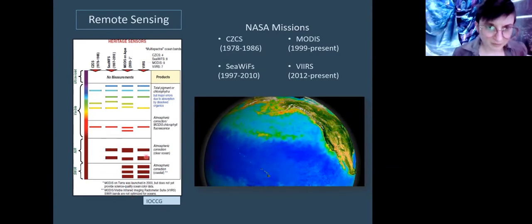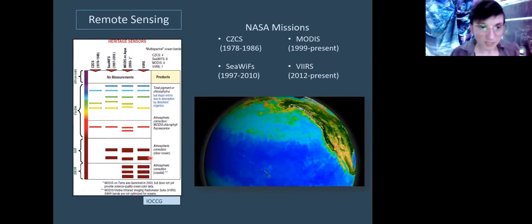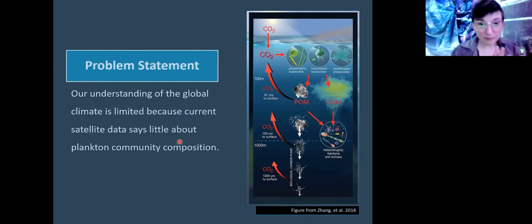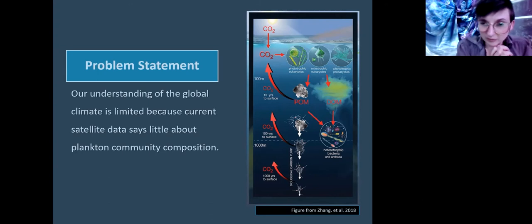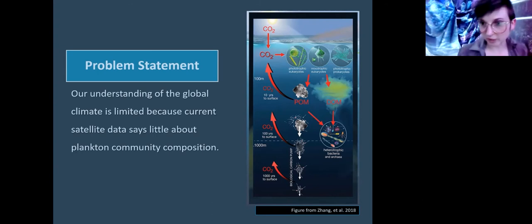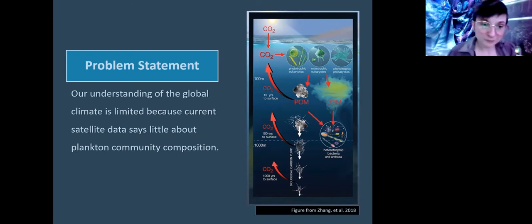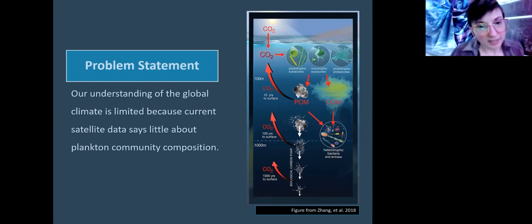But even still, we really have quite a range that we're not able to see. So the big problem that I see in microbial oceanography is that the global climate understanding is really limited because the current satellite data says little about plankton community composition. It reads chlorophyll as one chlorophyll. It might not even detect some chlorophylls, but it lumps all plankton together. So you know there's plankton there, but you don't know who they are, who there are more of or less of, or how things are changing at all.